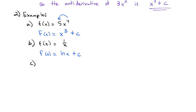What about trig? Let's do f of x equals sine of x. What is the anti-derivative — really, whose derivative is sine of x? We know the derivative of cosine is negative sine, so there's that extra negative. The derivative of negative cosine then must be positive sine. So the anti-derivative of sine of x is negative cosine of x plus any constant.